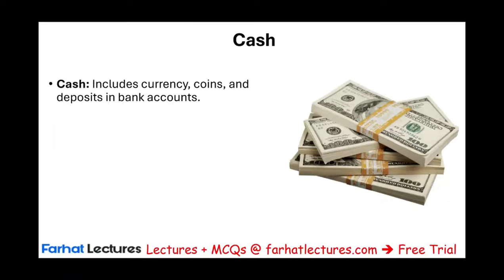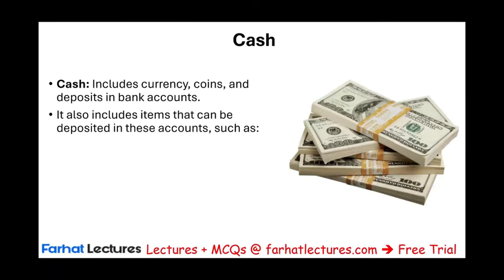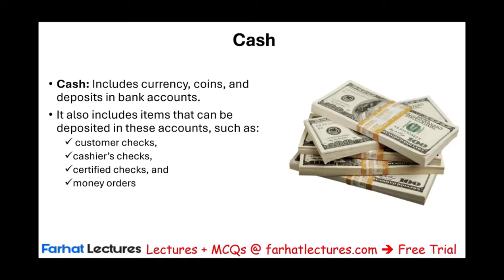Cash includes currency, coins, and bank account deposits. It also includes deposits such as customer checks — when you deposit customer checks into your bank account, that's listed under cash. Cashier's checks and certified checks are also cash; the money is guaranteed. Money orders are considered cash as well, though people don't use checks or money orders as much these days. Cash is physical cash — coins and currency.